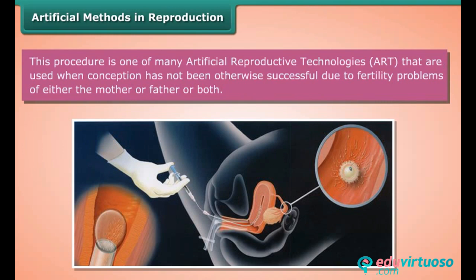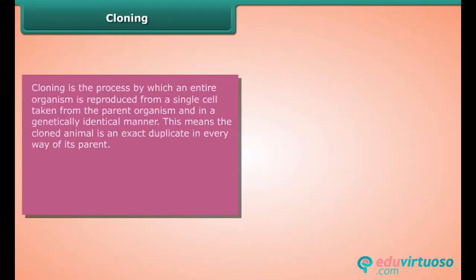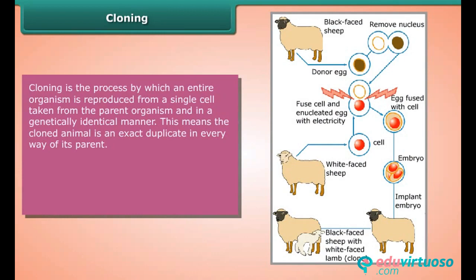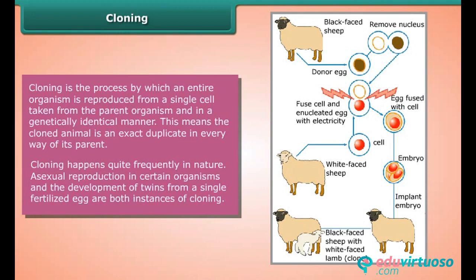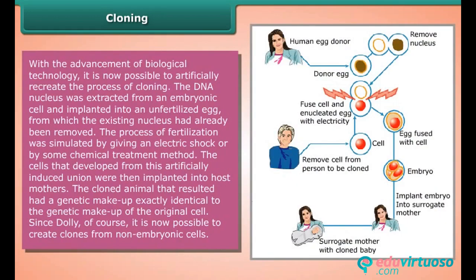Cloning is the process by which an entire organism is reproduced from a single cell taken from the parent organism in a genetically identical manner. This means the cloned animal is an exact duplicate in every way of its parent. Cloning happens quite frequently in nature — asexual reproduction in certain organisms and the development of twins from a single fertilized egg are both instances of cloning. With the advancement of biological technology, it is now possible to artificially recreate the process of cloning.